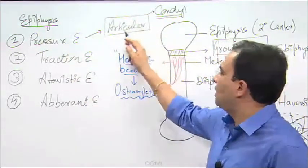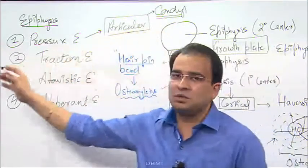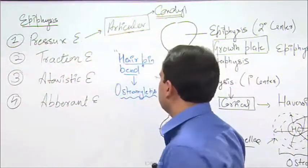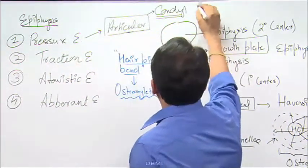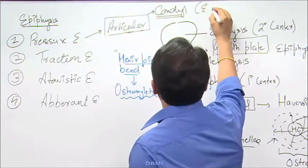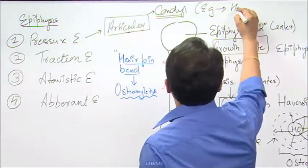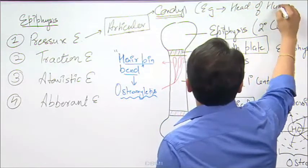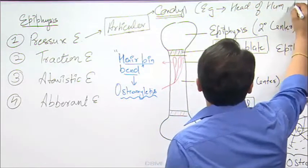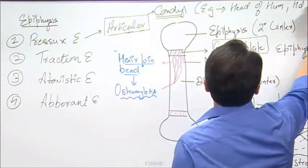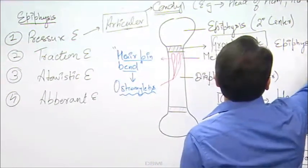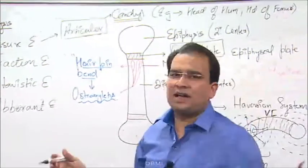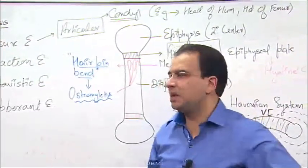Remember the words 'articular' and 'condyle' when it comes to pressure epiphysis. Examples you already know: head of humerus, head of femur, all the condyles — many examples.